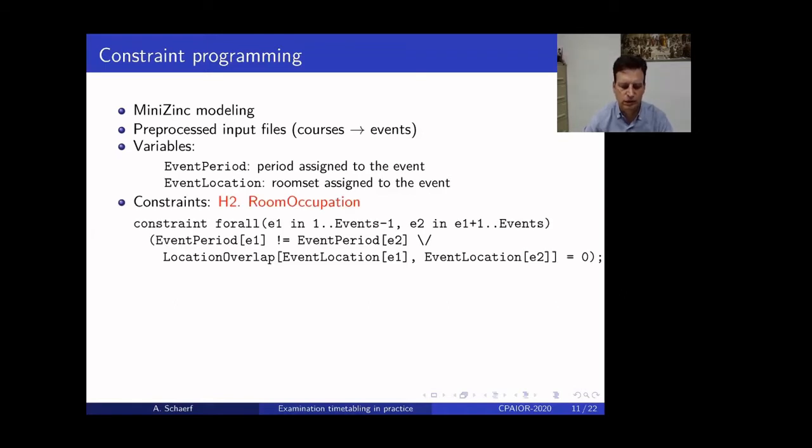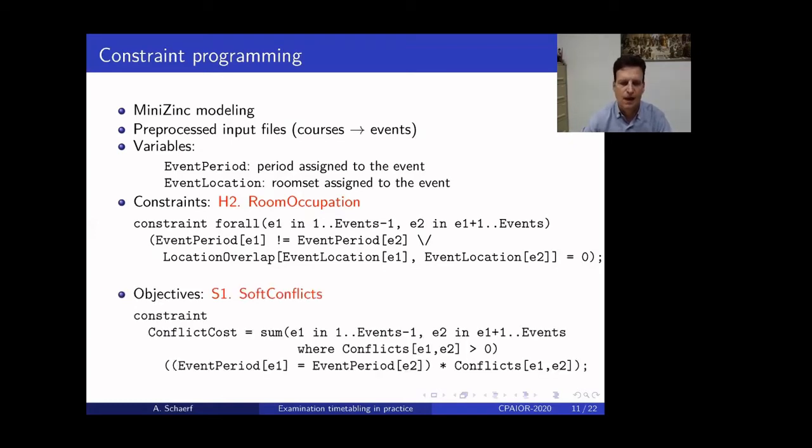So, we don't show the full model for brevity. So, I'll just give some examples. So, this is a constraint for room occupation. This is a disjunctive constraint. That means that for every pair of exams, either the period is different or the location is different. Where the location is different, given that we have sets of rooms, that the two sets assigned to the two rooms do not overlap. Notice that the dummy room does not overlap even with itself. So, it means that we can accommodate more events in the dummy room at the same time. Okay. This is an example of a soft constraint. So, we have the conflict cost, the definition of the variable conflict cost, which is the sum of the violations when, let's say, two exams are assigned to the same period.